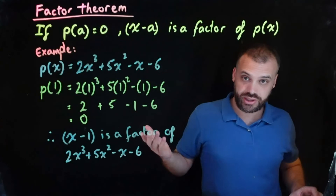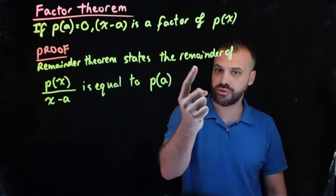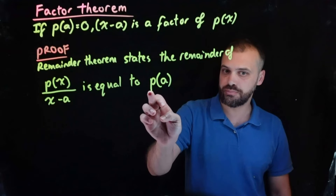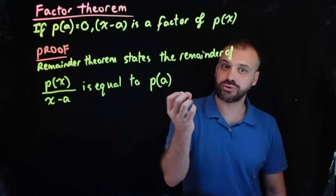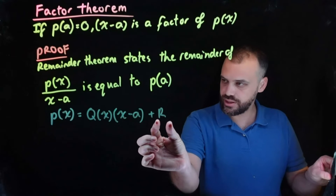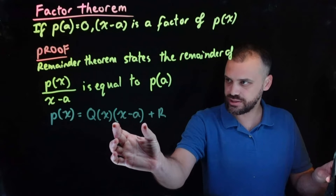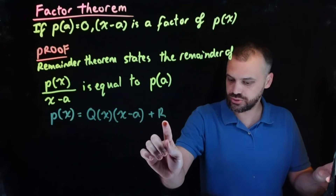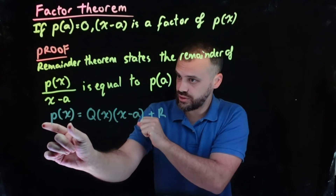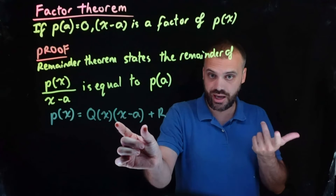So that's what it is. This comes directly from the remainder theorem. The remainder theorem states the remainder of a function divided by x minus a is equal to p of a. Sub in that value and you'll know what the remainder is. So if p of x equals the quotient times x minus a, and the remainder was equal to 0, then x minus a and the quotient are both factors of p of x.